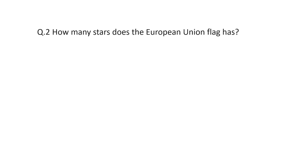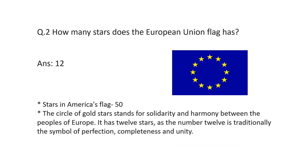Question number two: how many stars does the European Union flag have? The correct answer is 12. This blue color flag has stars placed in a circle. The gold stars show solidarity and harmony in Europe — these represent the 12 states. The number 12 is traditionally a symbol of perfection, completeness, and unity. As a little trivia, America's flag has 50 stars, representing America's 50 states.